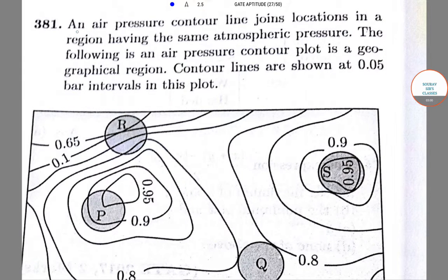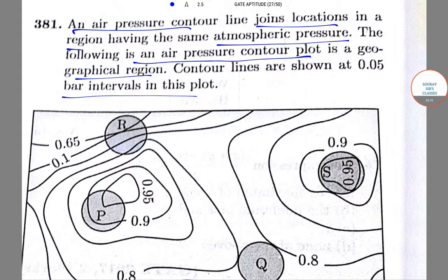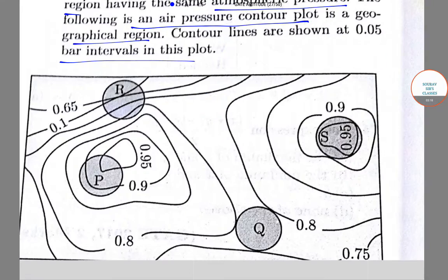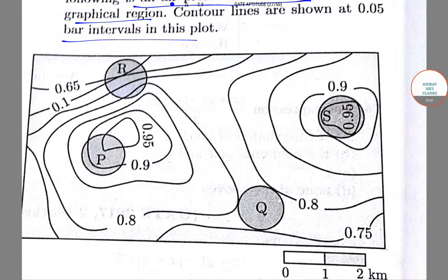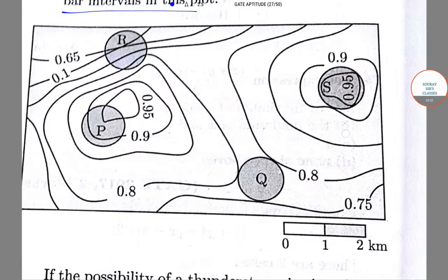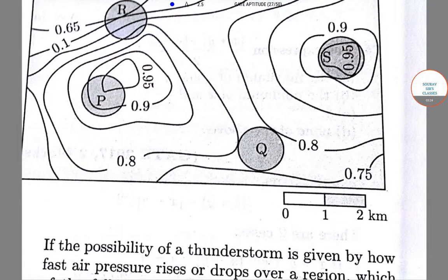The next question is, an air pressure contour line joins locations in a region having the same atmospheric pressure. The following is an air pressure contour plot of a geographical region. Contour lines are shown at 0.05 bar intervals in this plot. So, this is the contour map.